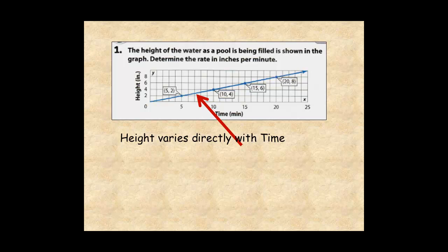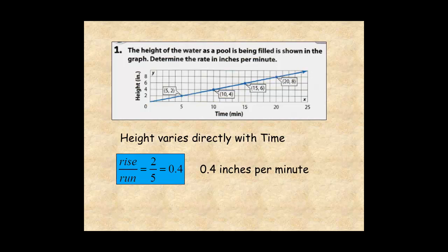Looking at the first two points on the graph, rise over run is 2 over 5, or 0.4. So the pool is filling at the rate of 4 tenths inches per minute. The direct variation is defined by the equation y equals 0.4x.